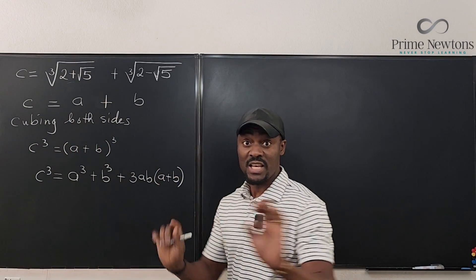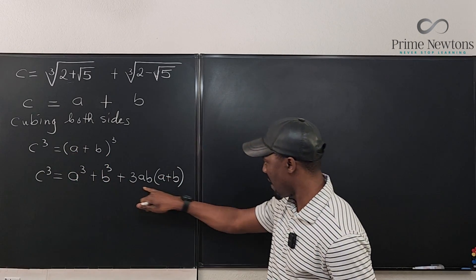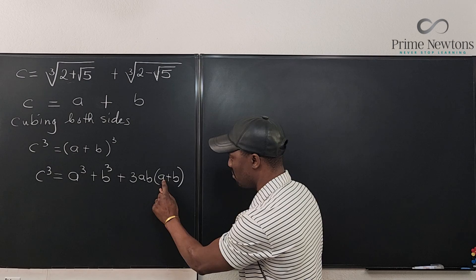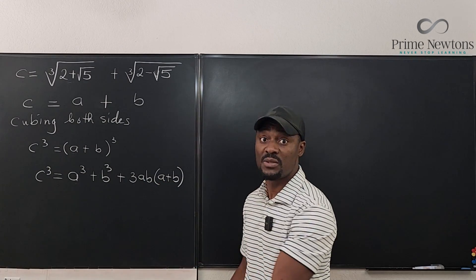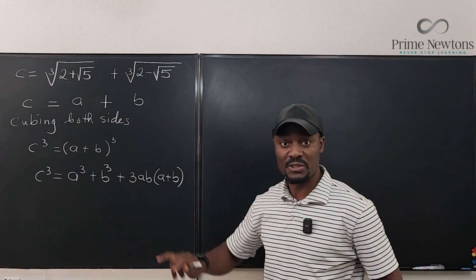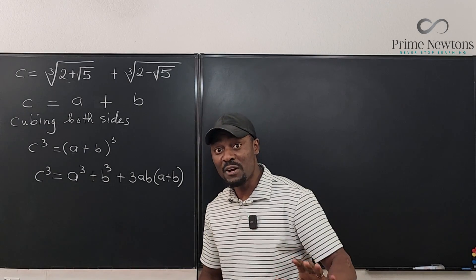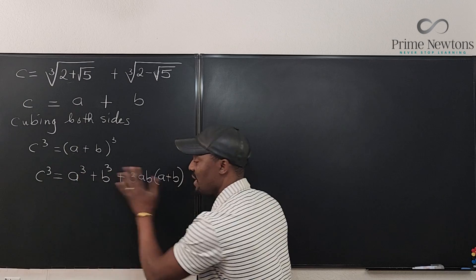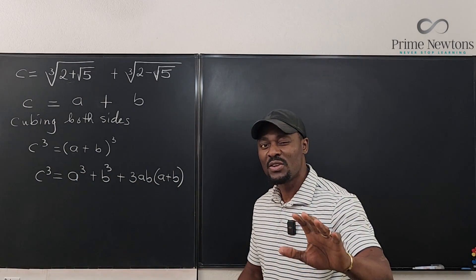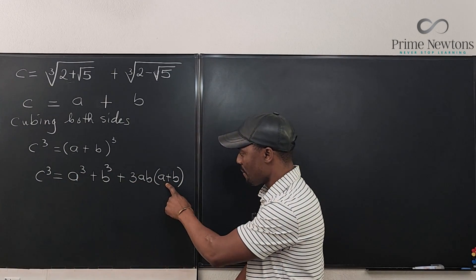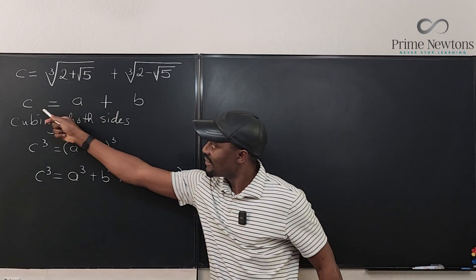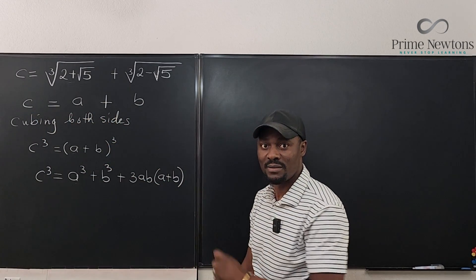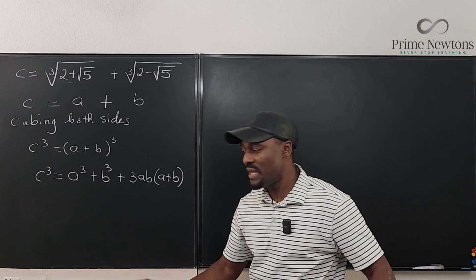You can verify by distributing: the 3AB(A+B) term expands to 3A²B plus 3AB², which are the two middle terms besides A cubed plus B cubed. Now things get easier. The most obvious substitution is A plus B, which we already know equals C, so we can replace that factor with C right away.